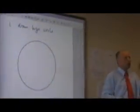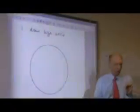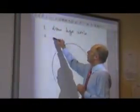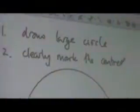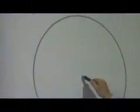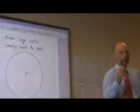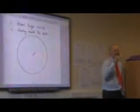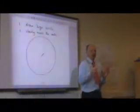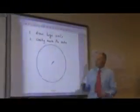Having drawn your circle, the next thing you need to do is clearly mark the centre of your circle. You should have a spike mark in the middle of your paper. The next thing you need to do is draw a triangle with the three corners on the circle.